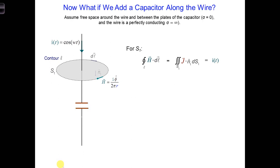But what if we have a gap along the wire where no current is flowing that we can see, like if we add a capacitor along the wire? In this case, there are no electrons physically moving between the two plates of the capacitor.